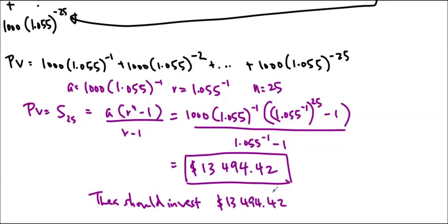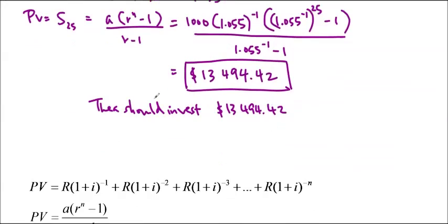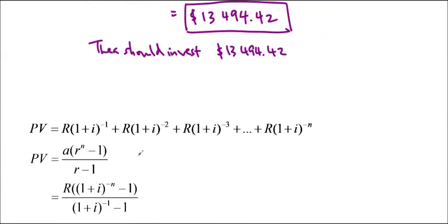Of course, we could develop a formula from this and so we shall. PV is equal to R, the amount you're paying out every year, times 1 plus i to the negative 1 plus R times 1 plus i to the negative 2 and so forth until we get to R times 1 plus i to the negative n. This is again a geometric series where A is equal to R times 1 plus i to the negative 1 and r is equal to 1 plus i to the negative 1 and n is n.